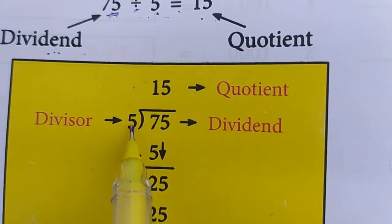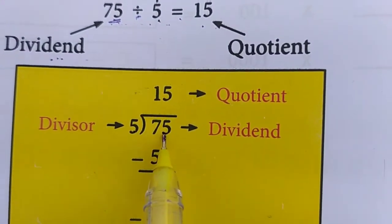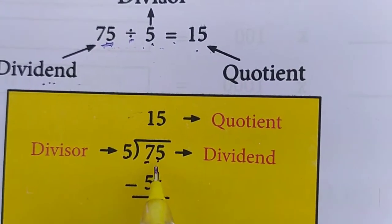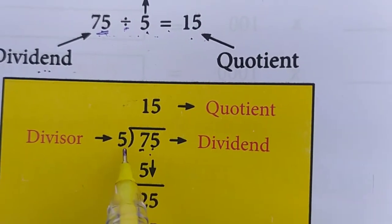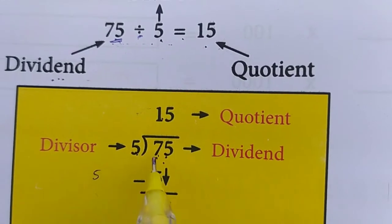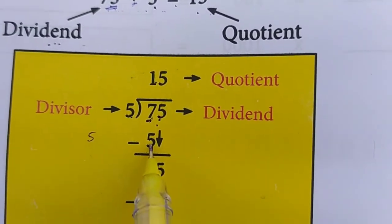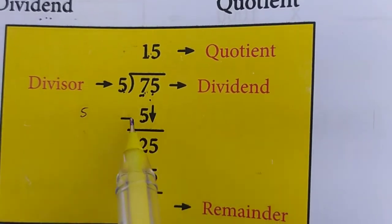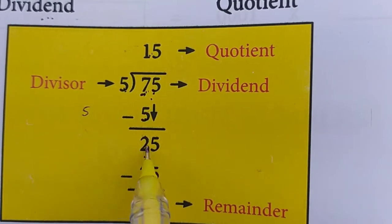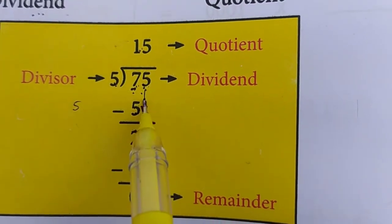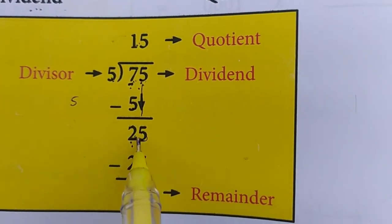5, 75, when you divide, we will write like this. First we take the tens place digit. In the 5 table, 5 ones are 5. 7 minus 5, when you do subtraction, you will get 2. Next step, we have to take the ones place number here.